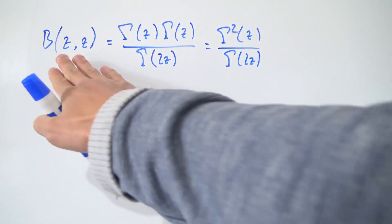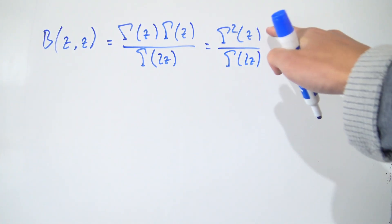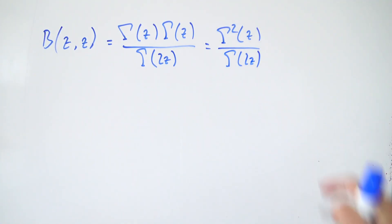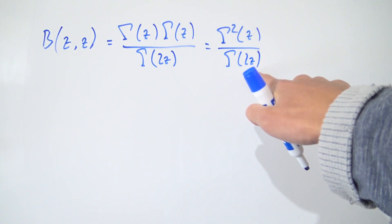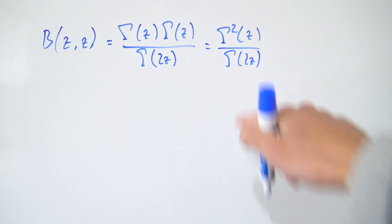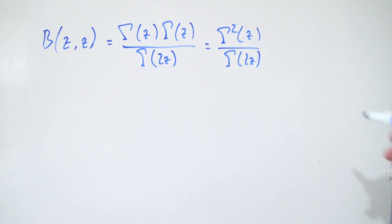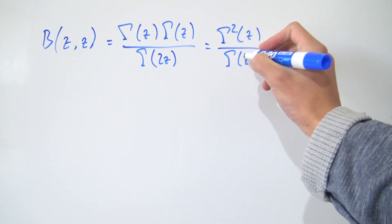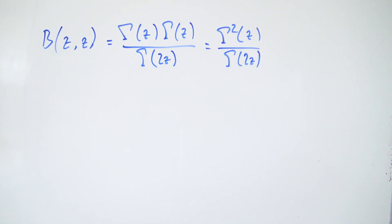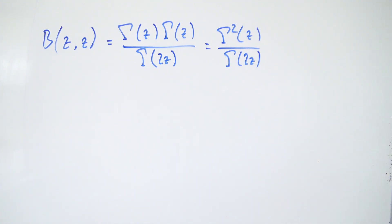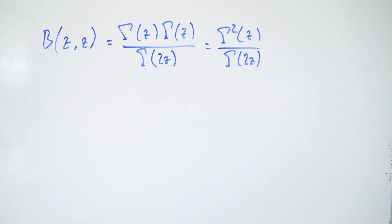So this is our beta of z and z in terms of gamma functions. Already you can see where the name 'duplication' comes from in Legendre's duplication formula, because we have this gamma of 2z here, which is going to pop up in our equation later. Now let's actually write it in terms of an integral.